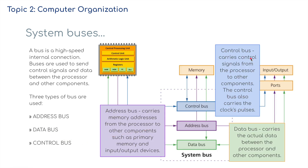The control bus carries control signals from the processor to other components, and also carries the clock's pulses to make sure everything's in time. The data bus carries the actual data between the processor and other components. The address bus carries the memory addresses from the processor to other components, such as primary memory and inputs and outputs — basically telling us where the data can be found.